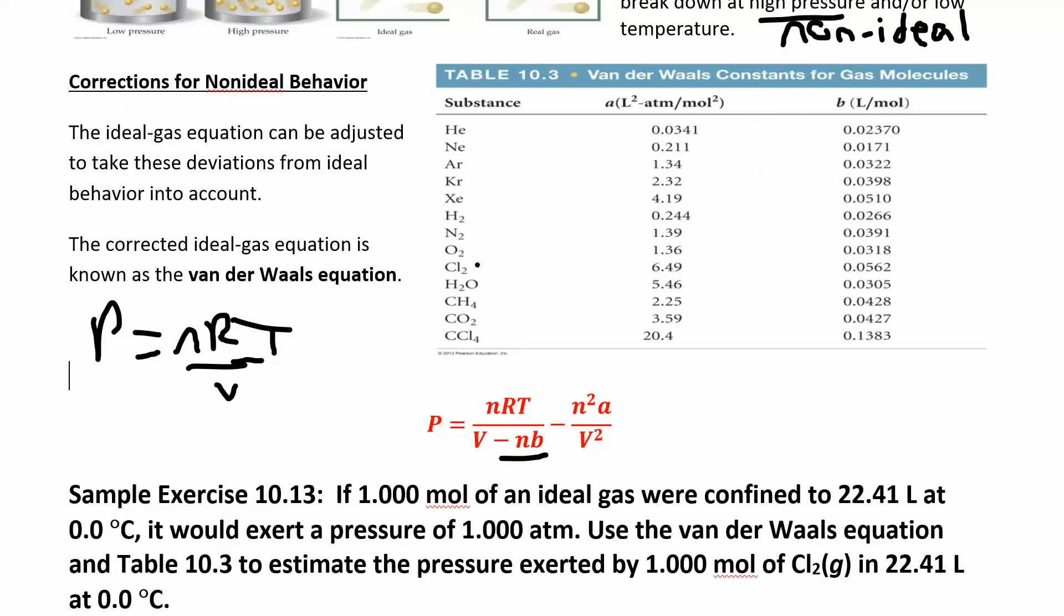Whatever gas I have here, I would look up that B constant and multiply by the moles. This other term has to do with the attractive nature of the molecules. N squared, again N is the number of moles, V is the volume, and A is this constant. I'm going to incorporate these two new constants A and B, which are specific for whatever molecule.